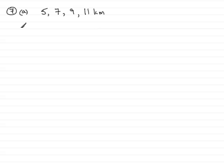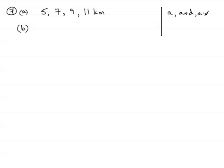In part b we've got to find out how far she would run on the nth Sunday. This sequence of numbers is often referred to as an arithmetic progression or arithmetic sequence. You should know that if the first term is a and it goes up in equal steps of common difference d, then the nth term is always given by a plus n minus one times the common difference d, and it's this fact that we're going to use here.